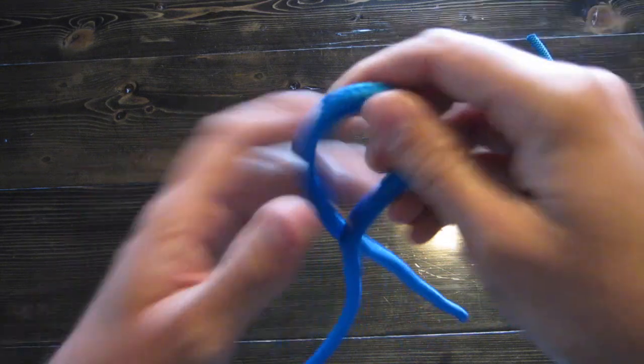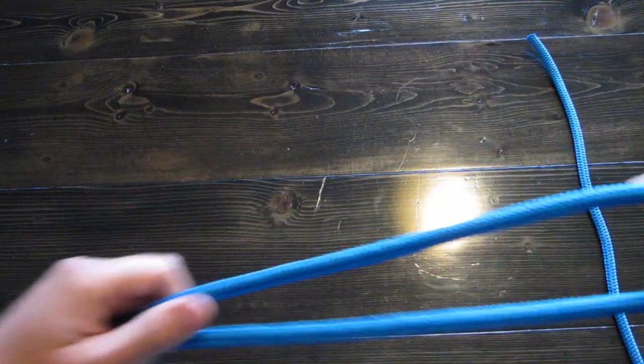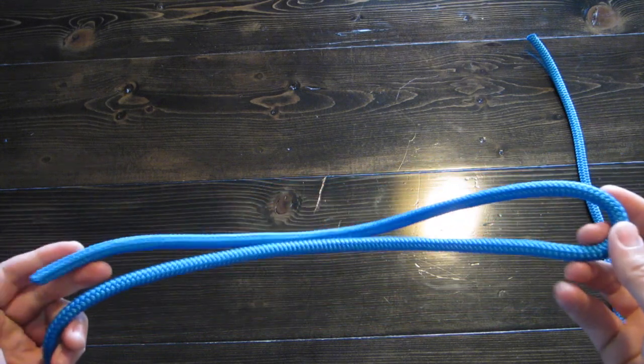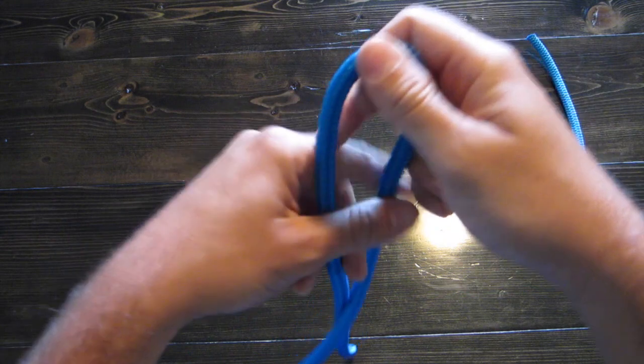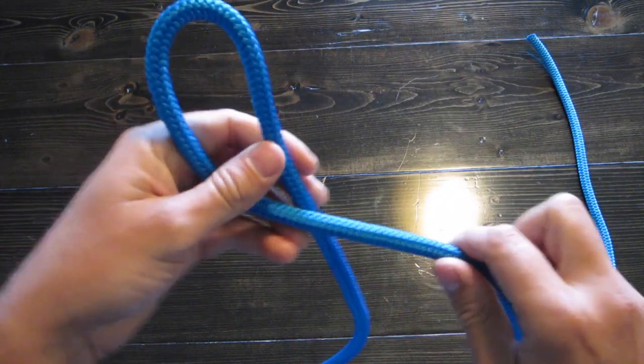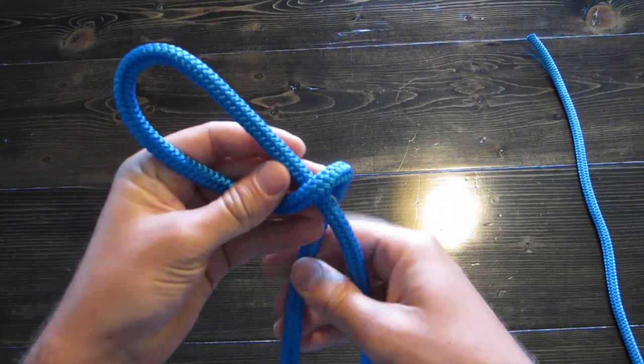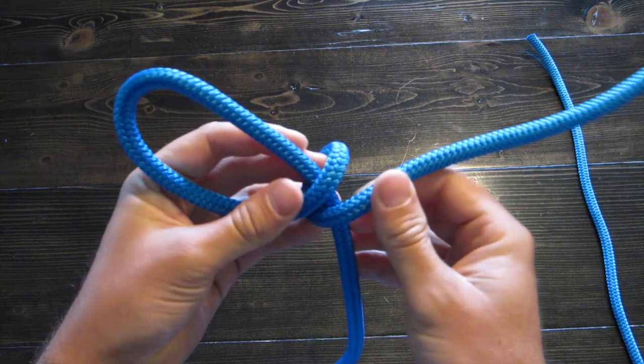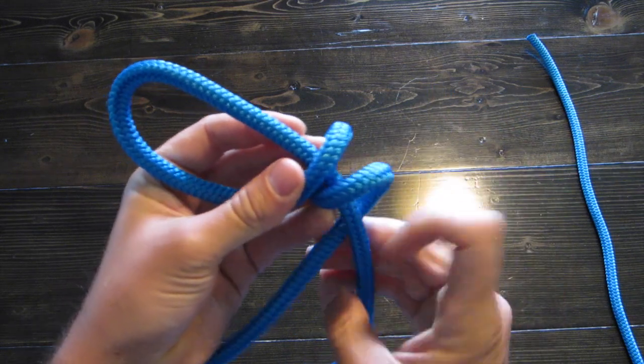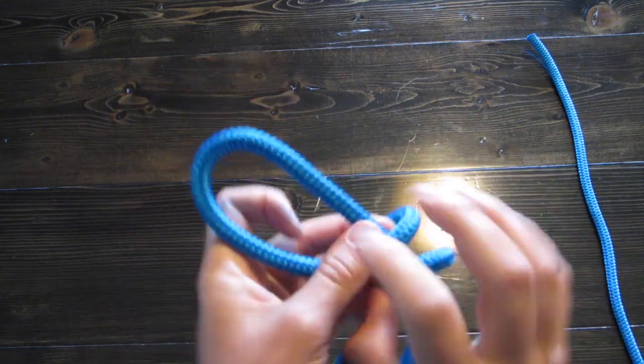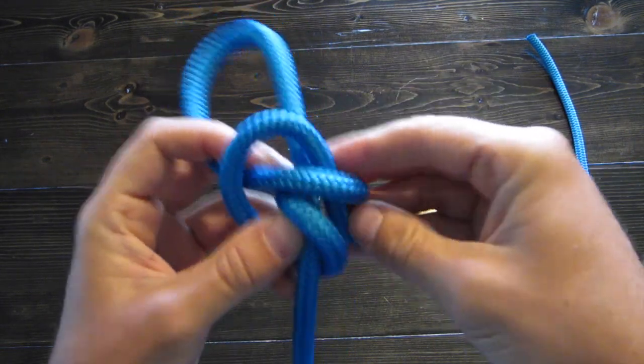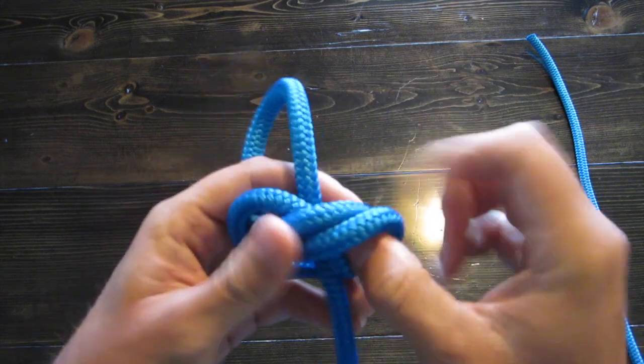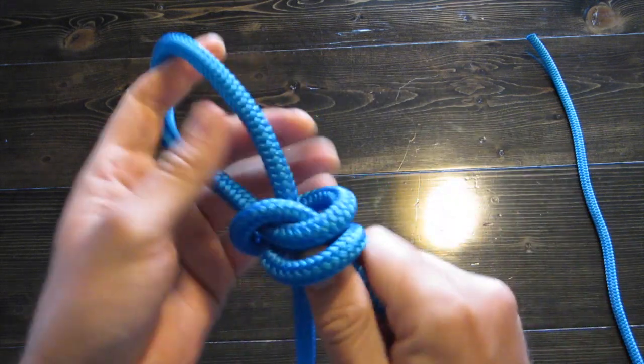So the first thing you want to do is double your end of your rope over, just like this. It's a very simple knot. So all you want to do is wrap your tail around your rope a couple times, just like this. And bring that tail back up and through your wraps, just like that.